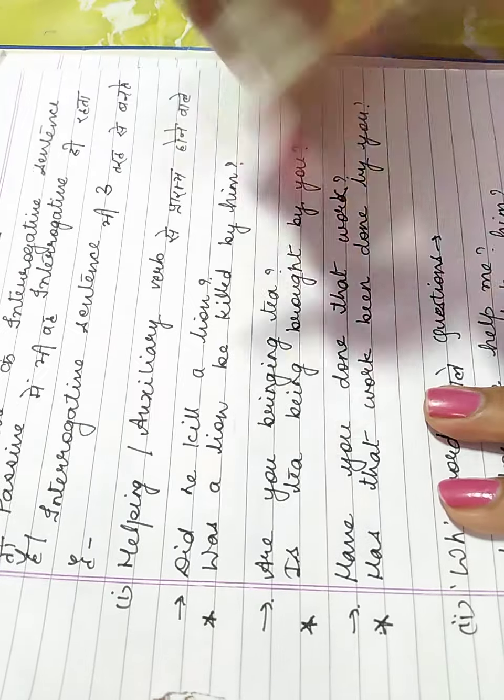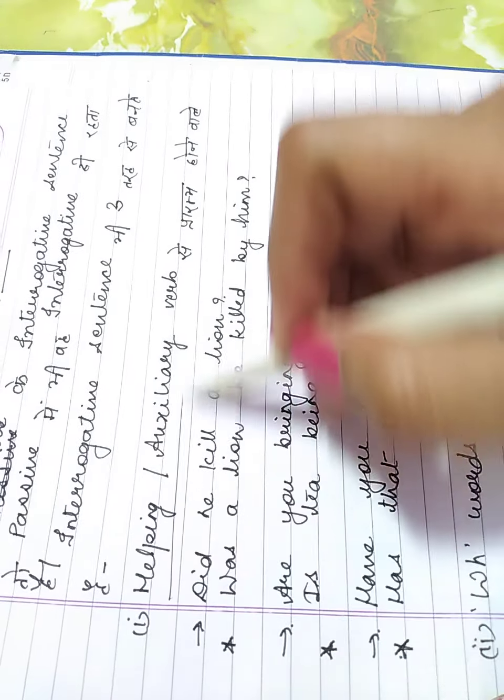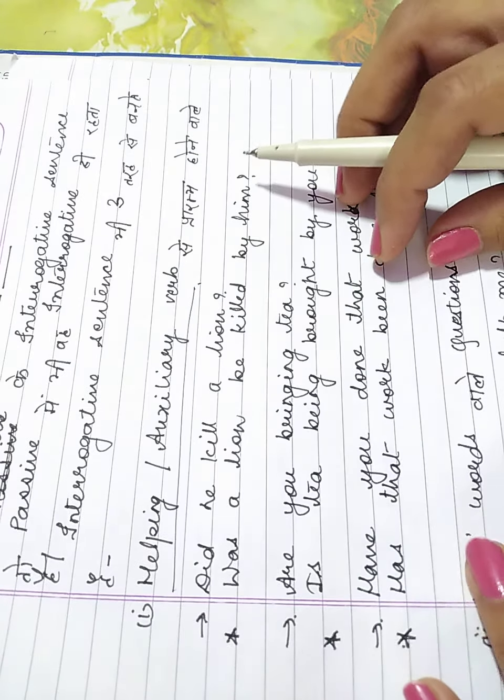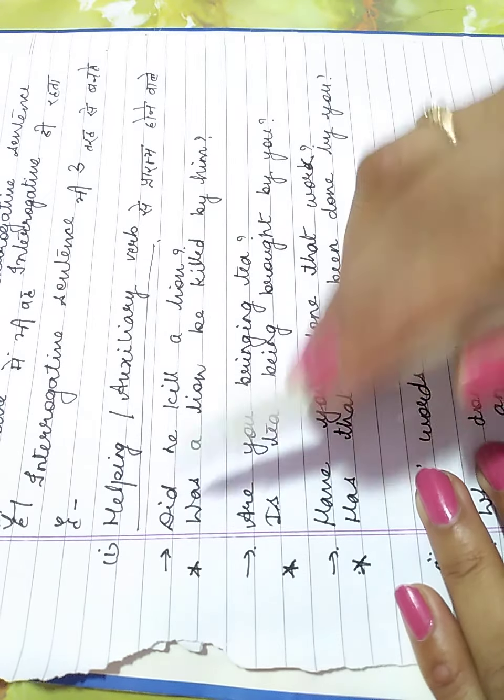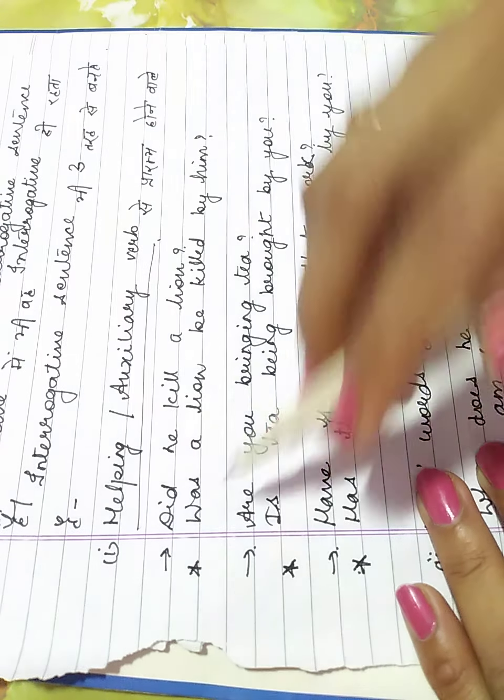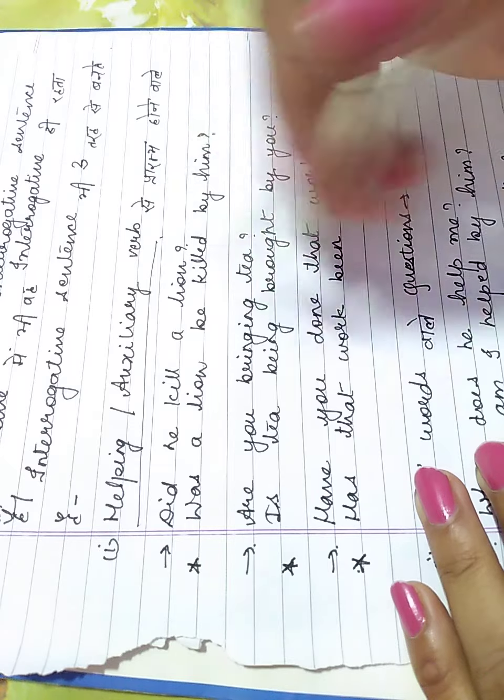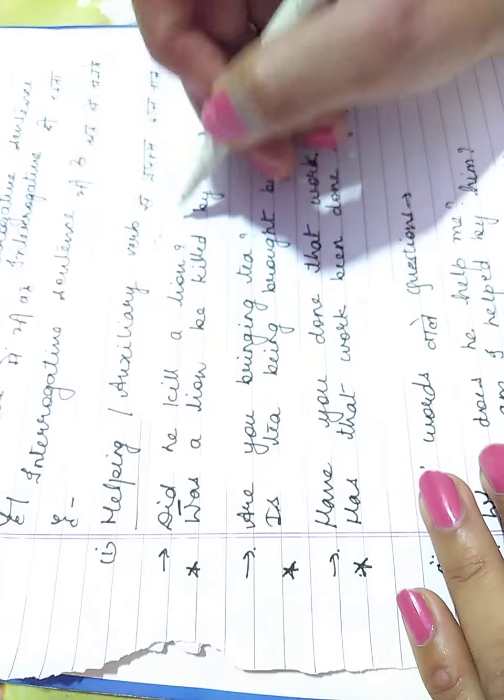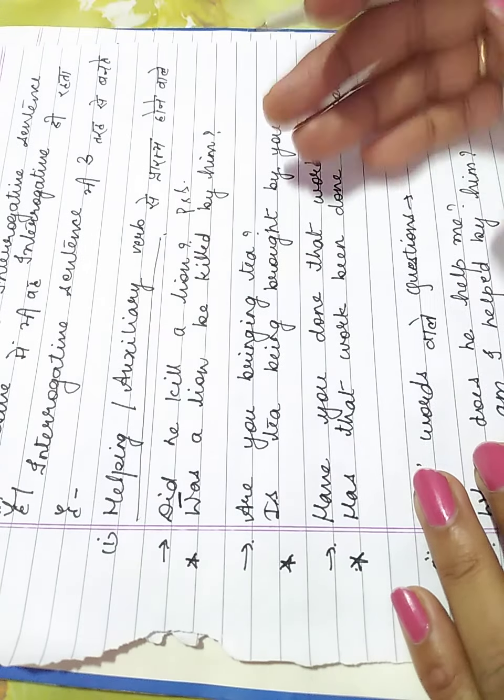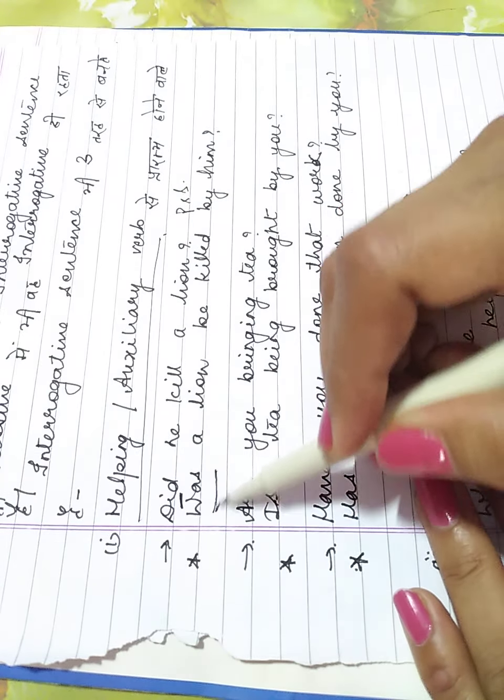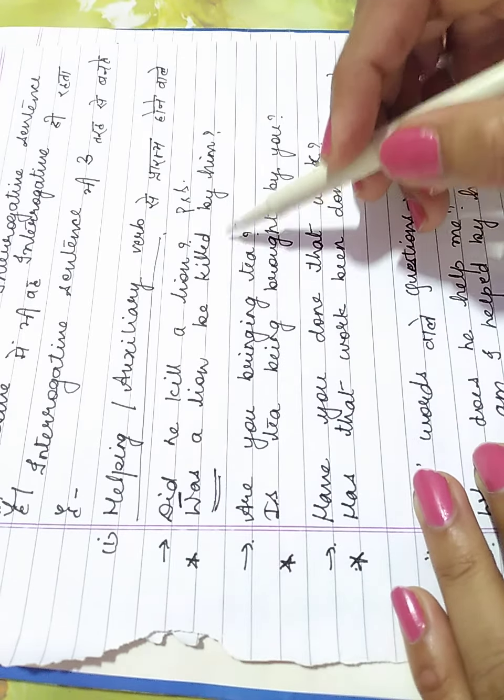Now, interrogative sentences become three types. First, questions starting with the helping verb or auxiliary verbs. I gave certain examples: Did he kill a lion? Now, this is past simple. So, past simple, the change will be, was as a helping verb will start: Was a lion killed by him?